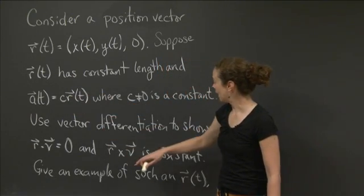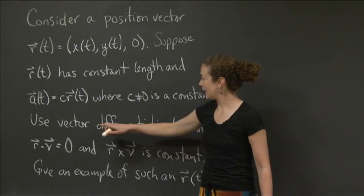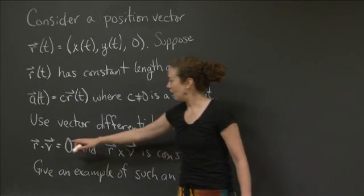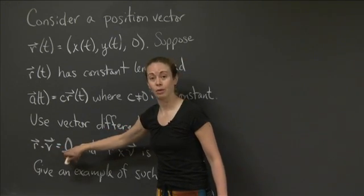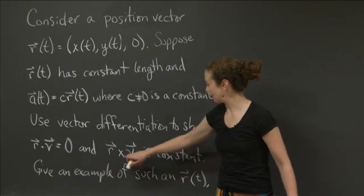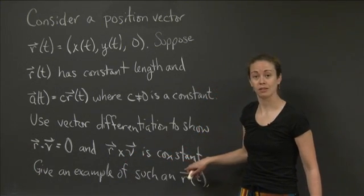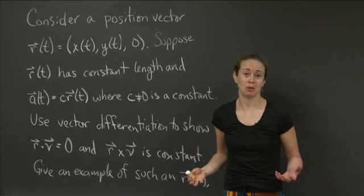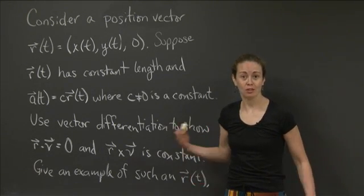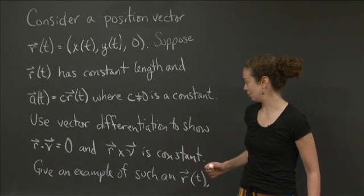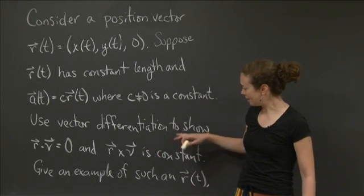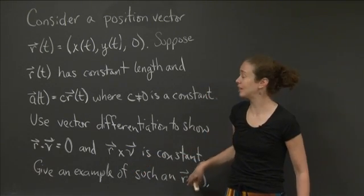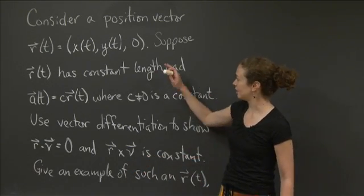Given those conditions, I want you to use vector differentiation to show that r·v = 0, where v is the velocity, and then to show that r×v is constant. The hard part of this problem is figuring out which relationship you want to differentiate to show these two things. And then I want to see if you can give an example of a position vector that has these properties.